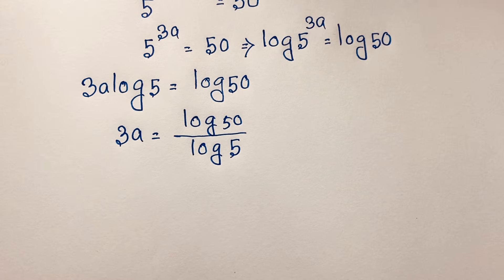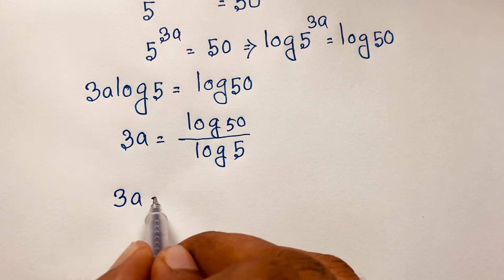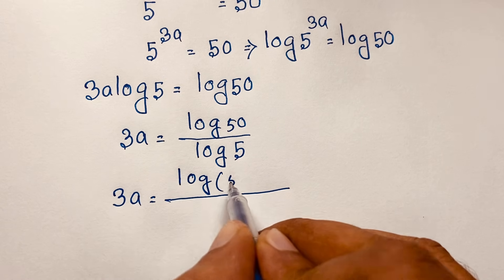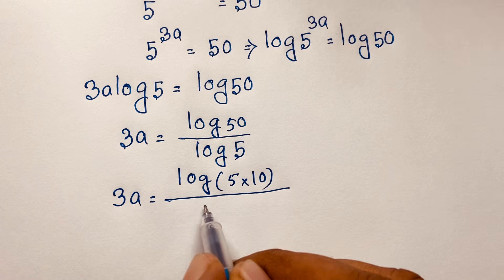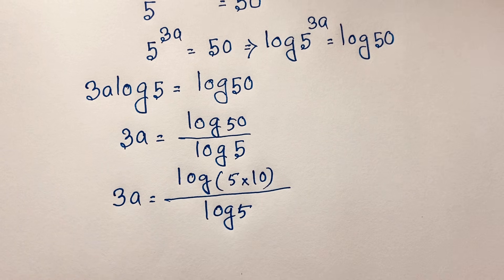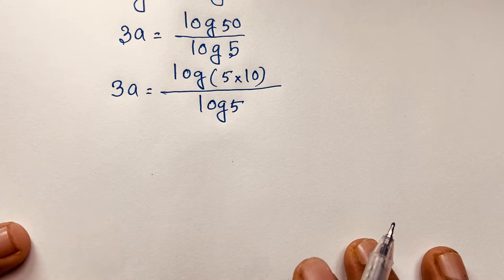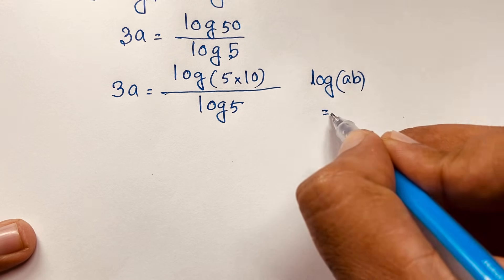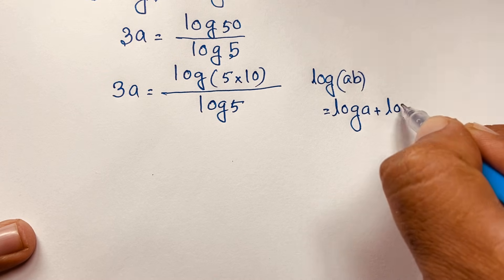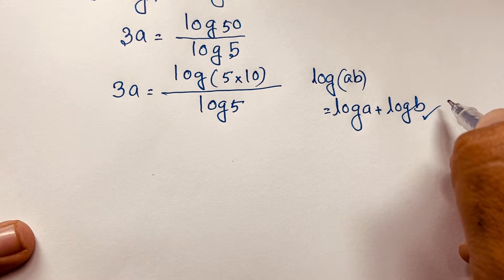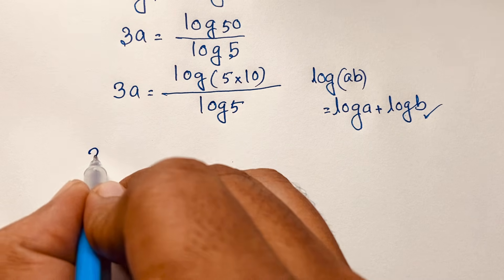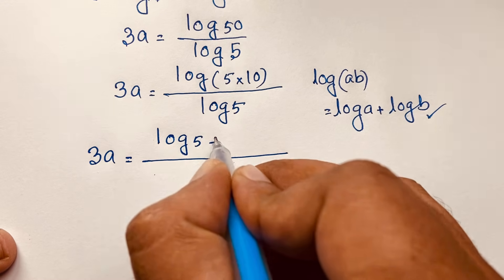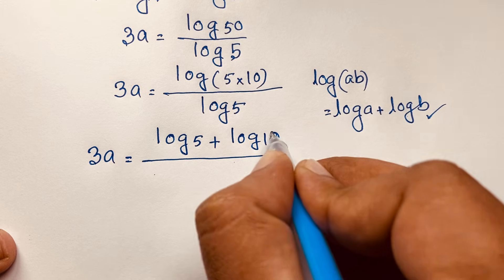Now log 50 can be written as log of 5 times 10, and the denominator is log 5. According to logarithm rules, log(ab) equals log a plus log b. If I apply this formula here, this expression becomes 3a is equal to log 5 plus log 10, all over log 5.